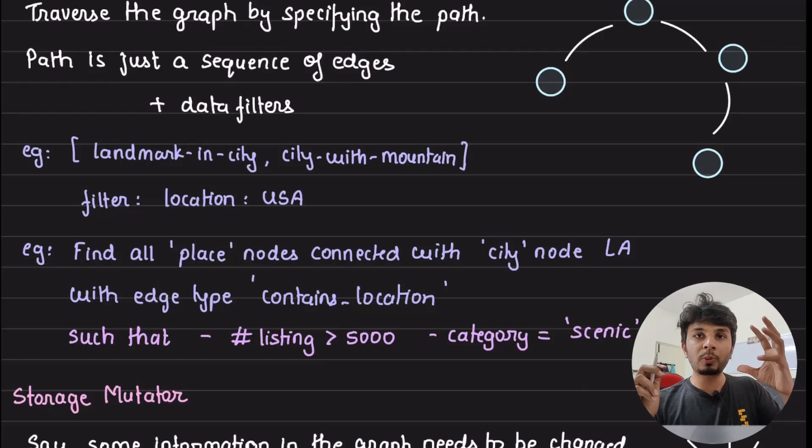Now this could be a simple JSON format in which they are expressing this query, and this query layer understands it, understands that particular JSON, and then goes to the knowledge graph, converts this type of query into relational database understandable SQL query, fires on the relational database, gets the output, and sends the response back to the user.